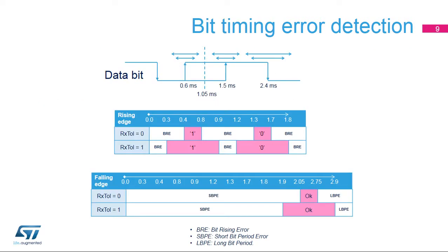This slide describes the various bit timing errors during message reception. A bit rising error (BRE) is set by hardware when a rising edge is detected within a data bit outside of the Rx windows configured by RxTOL. Upon BRE detection, CEC message reception is optionally aborted if bit BRE_STP is set to 1, and an error bit is optionally generated on the CEC line if BRE_GEN is set to 1. A short bit period error (SBPE) is set by hardware when a falling edge is detected ending the data bit before that expected by the RxTOL margin. Upon SBPE detection, an error bit is always generated on the CEC line and reception is aborted. CEC starts waiting for the next start bit once the CEC line is idle again.